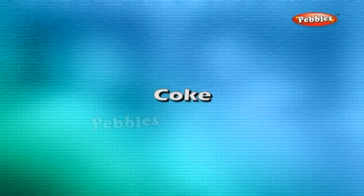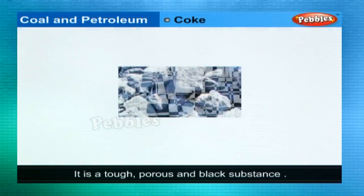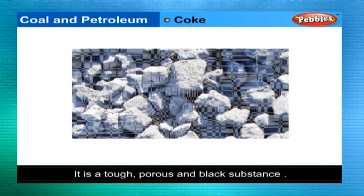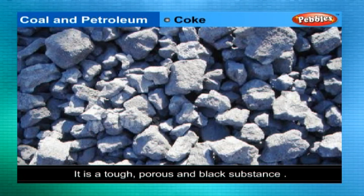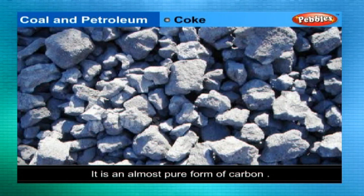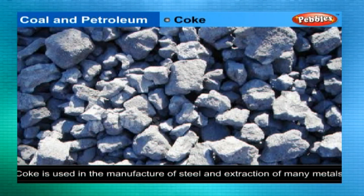Coke: It is a tough, porous and black substance. It is an almost pure form of carbon. Coke is used in the manufacture of steel and in the extraction of many metals.